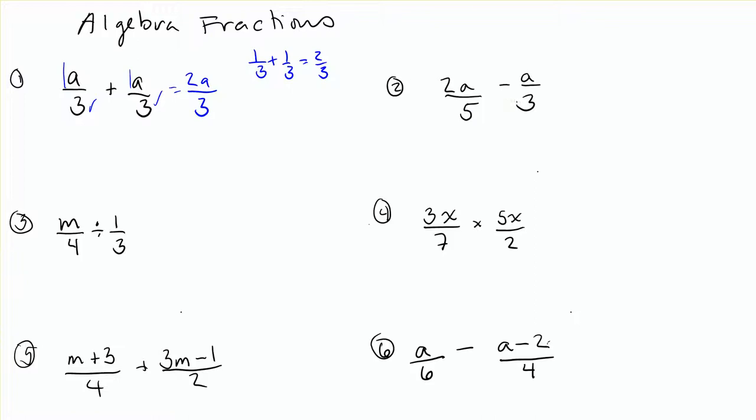Number 2, here I see my bottoms are no longer the same. I don't have a common denominator, so I need to fix that. Something they both have in common could be 15, so I'm going to times this side by 3 to the top and 3 to the bottom, because 3 times 5 will get me 15.